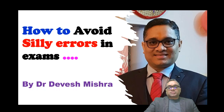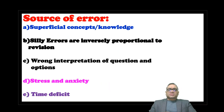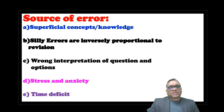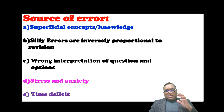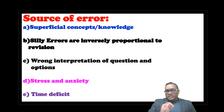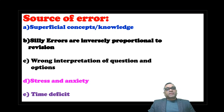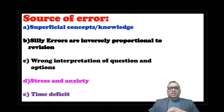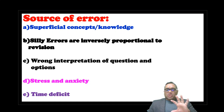First, you should know the sources of error. The first and most important one is superficial concept and knowledge. For beginners, second and third year students, remember very firmly that superficial concept and knowledge is the most killing thing. Many students want to finish the course very fast or compromise with shortcuts — do not do this.